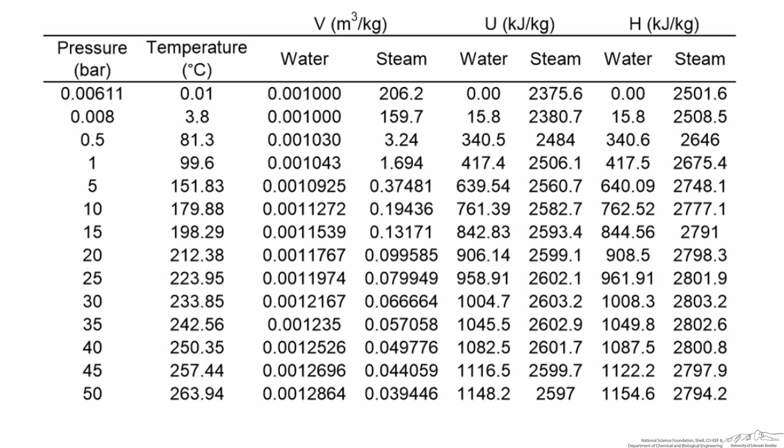Here's another example. If we look at part of a steam table, the reference is liquid water at the triple point. The triple point is the pressure 0.00611 bar, temperature which is 0.01, and note right here that the enthalpy for liquid water is zero. So the reference for the steam table would be water liquid at the triple point.